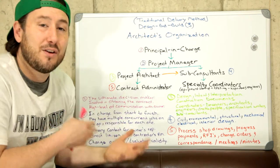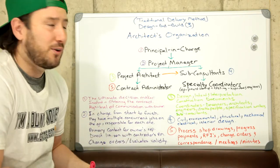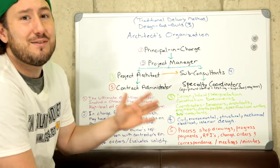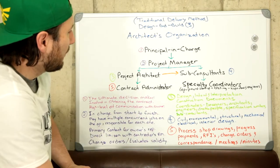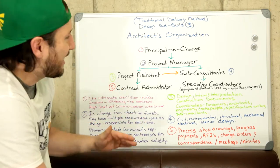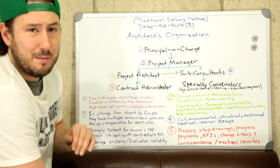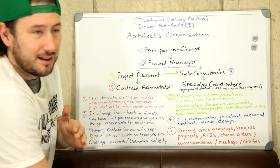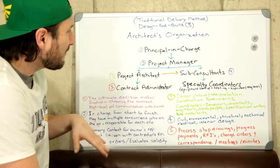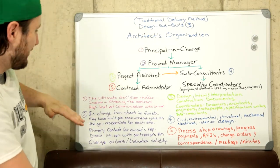Design-bid-build is still the most widely used delivery method even today, and this demonstrates how complicated construction is. I had to break it down into several videos because it's just so complicated. Now, the architect's organization: the principal in charge is the ultimate decision maker involved in obtaining the contract.